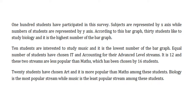An equal number of students have chosen science and accounting for their advanced level streams. It is 12, and these streams are less popular than maths, which has been chosen by 16 students.